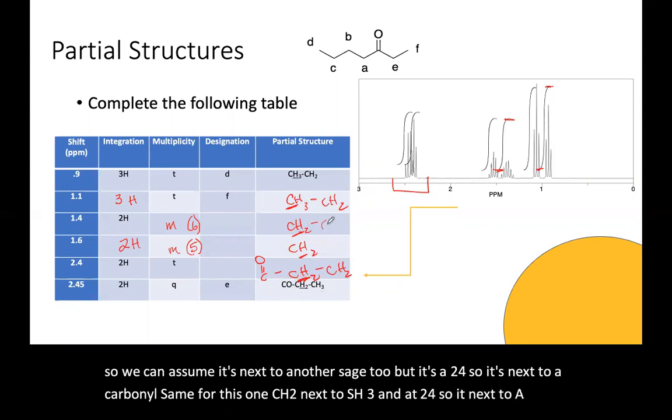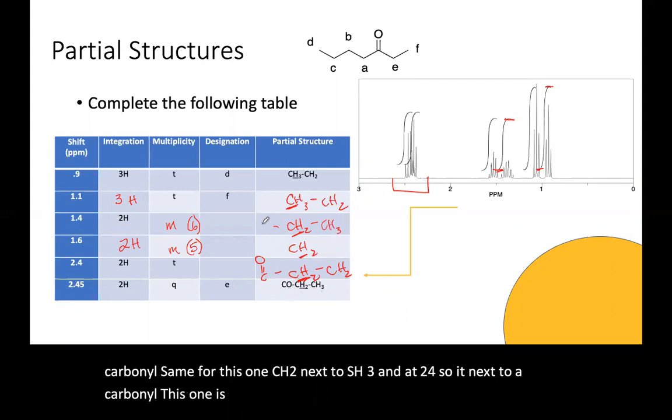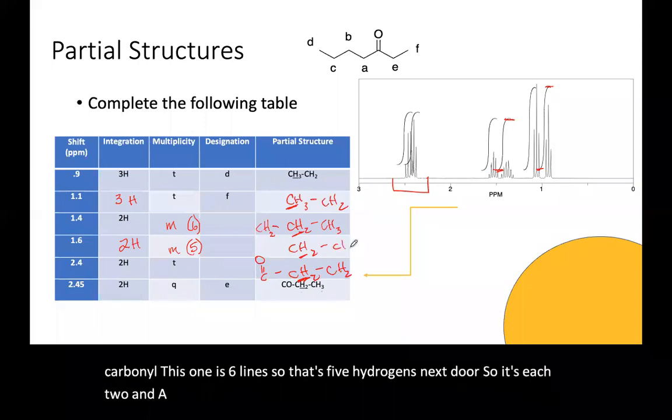This one is six lines. So that's five hydrogens next door. So a CH2 and a CH3. And this one must be next to two CH2s to give you a five line spectrum.